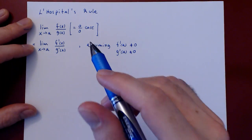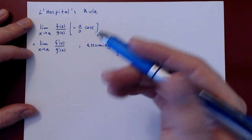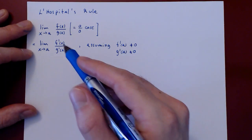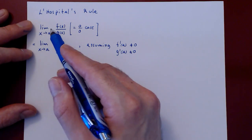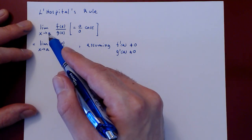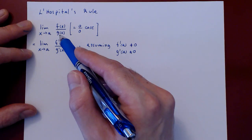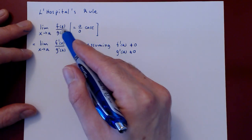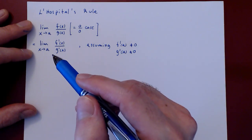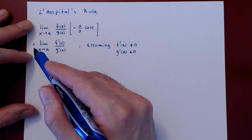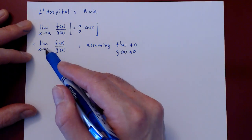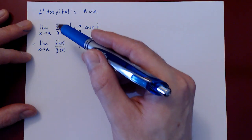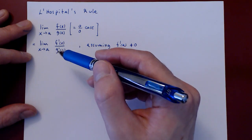In this video, we want to provide a heuristic proof of L'Hopital's rule in the 0 over 0 case. The rule states that if we have a limit as x approaches a real number of the ratio of two functions giving a 0 over 0 case — so as x approaches a, both f and g are approaching 0 — then the limit will be equal to the new limit where x is still approaching a, but it will be the ratio of the corresponding derivatives.